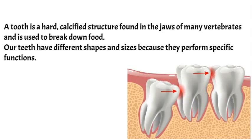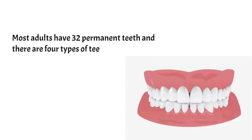A tooth is a hard calcified structure found in the jaws of many vertebrates and is used to break down food. Our teeth have different shapes and sizes because they perform specific functions. Most adults have 32 permanent teeth, and there are four types of teeth.